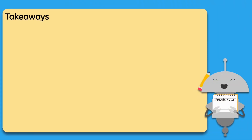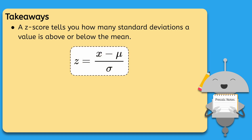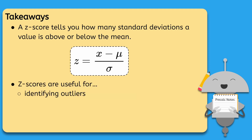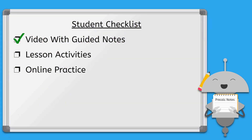Let's take a look at our key takeaways for today. You learned that a z-score tells you how many standard deviations a value is above or below the mean, and it can be calculated by subtracting the mean from a value, then dividing by the standard deviation. You also learned that z-scores are useful for identifying outliers and comparing values across different distributions. Make sure you finish up your guided notes before moving on to the lesson activities, then complete the online practice. See you next time!